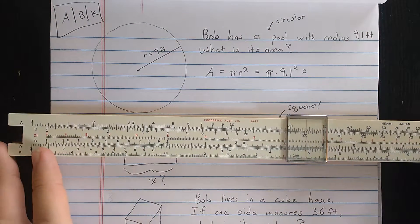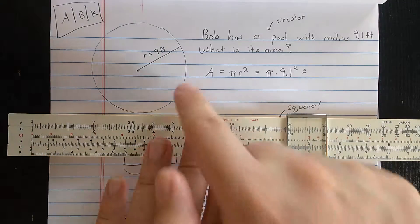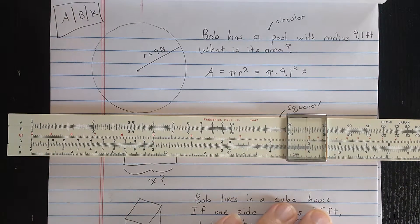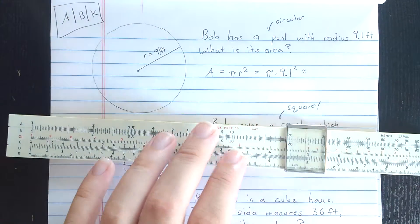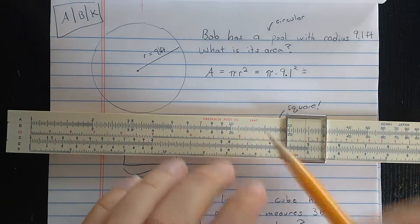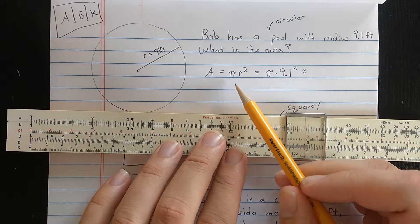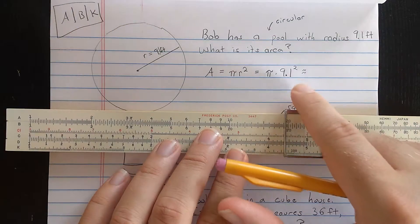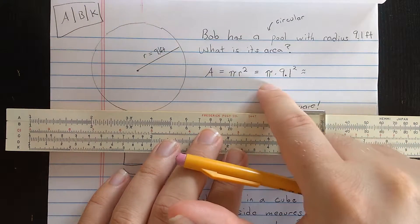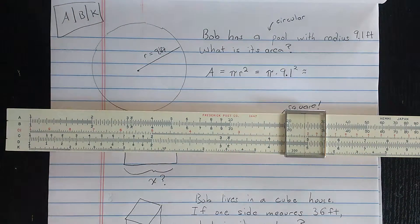Let's use the combination of those two ideas to compute the area of Bob's pool. Bob's pool has a radius of 9.1 feet. Sorry, mislabeled here, 9.1 feet. What is its area? Well, I know area is pi r squared for a circle. And so I need to find 9.1 squared and then multiply by pi following the order of operations.